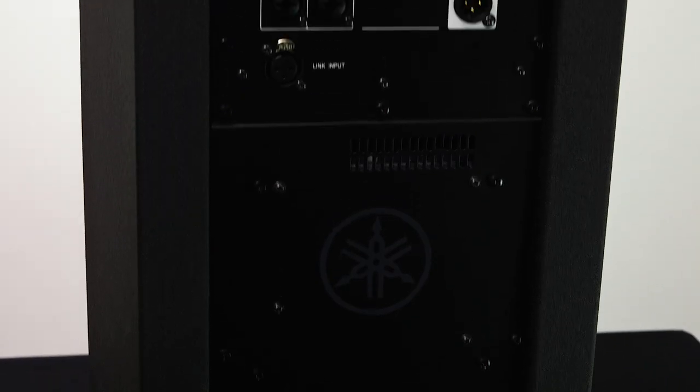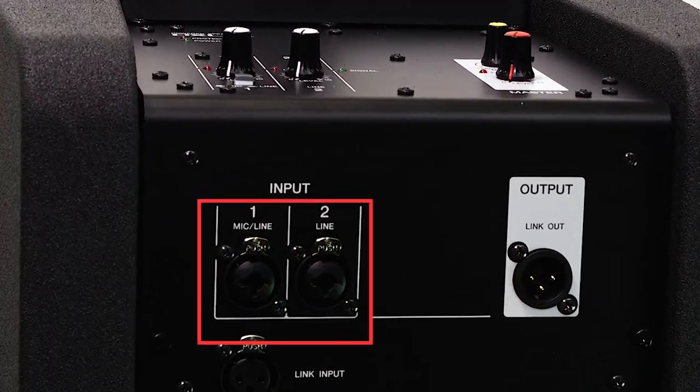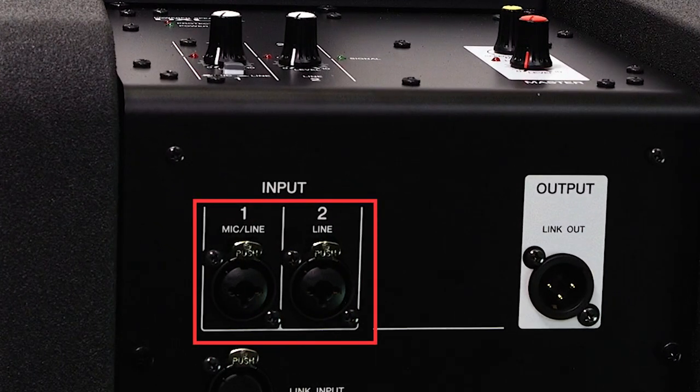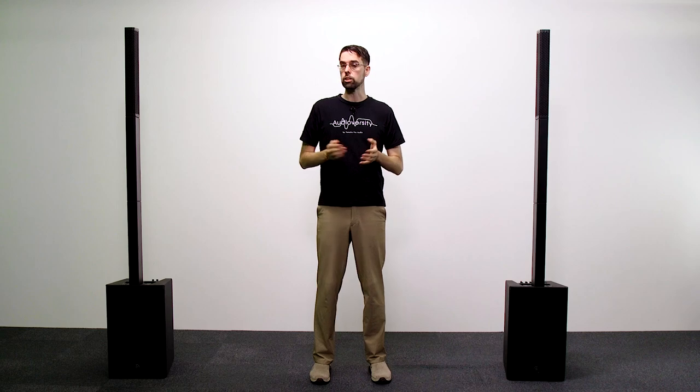Similar to our D-series speakers, the DXL-1K provides a simplified input section with two XLR phone combo jack inputs with both channels accepting line level signals and channel 1 including a mic level input switch.